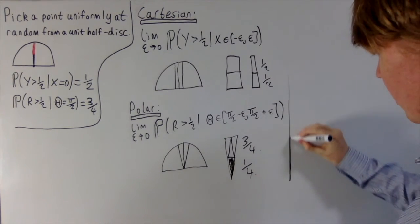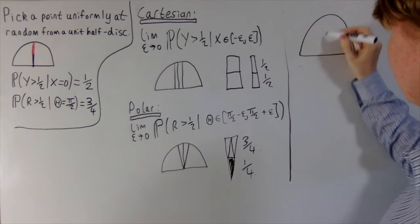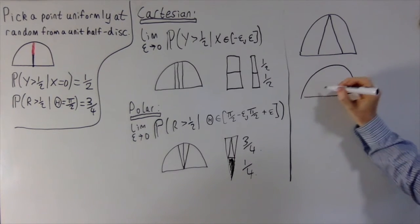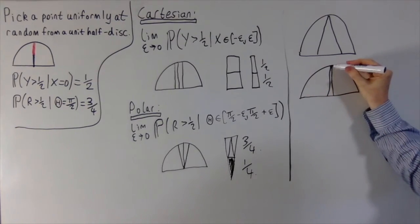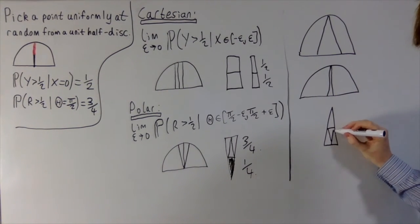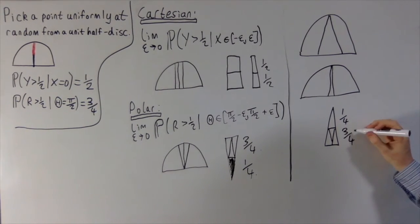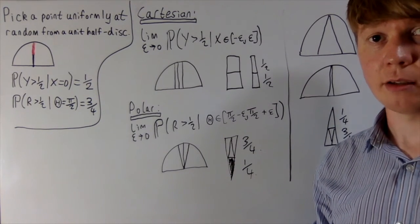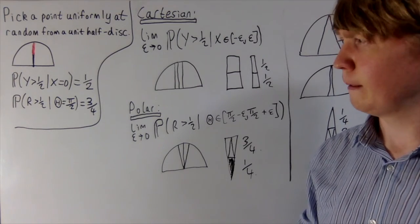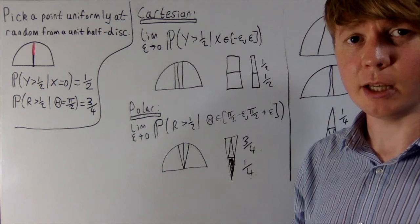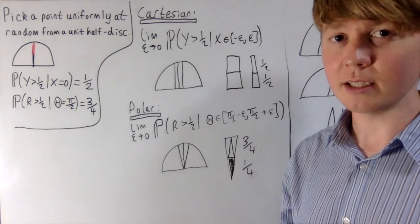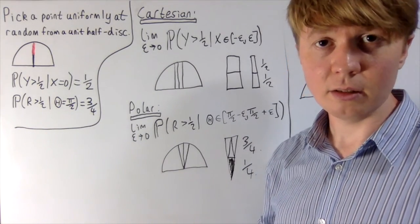There's no reason we couldn't take limits in yet another way — for example, using a triangle with a shrinking base width, which would give a probability of one quarter for the top half and three quarters for the bottom half. The important takeaway is: when calculating a conditional probability conditioning on a zero-probability event, at some point you must take limits. Depending on how you take those limits, you get a different conditional probability. There is no single conditional probability of being in the top half of this line given that you lie on it — it depends on the limiting process you use.